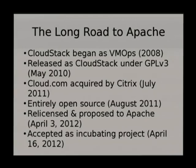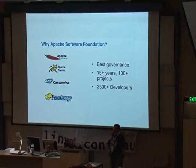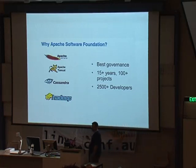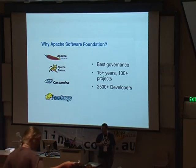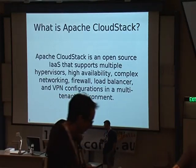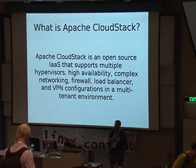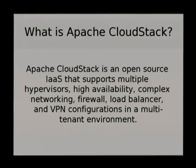It was relicensed and proposed to Apache because a lot of people were saying they liked CloudStack but had problems with the governance and GPL v3. It was basically donated to Apache, accepted as an incubating project in April, and we had our first major release in November of last year. Companies are very comfortable with the Apache governance model — Apache has been around a long time and shepherded many successful projects. So now we are talking about Apache CloudStack.